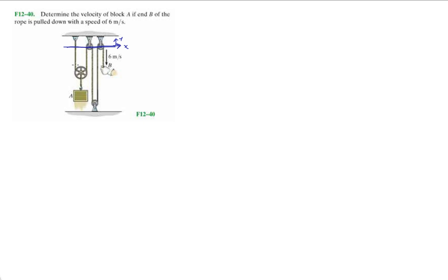And we want to determine the velocity of block A of the rope, if end B of the rope is pulled down with a speed of 6 meters per second. So we're pulling this down, so B goes down this way. So what happens to this part and this part?